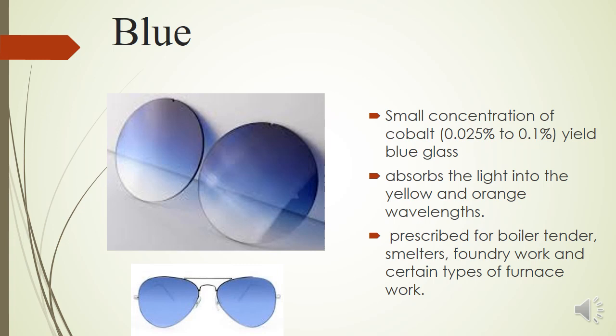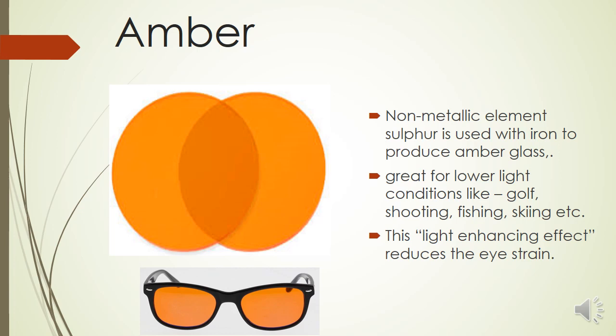The blue tint is produced by adding a small concentration of cobalt to the glass. It absorbs light in the yellow and orange wavelengths. This tint can be prescribed to people working in environments with molten glass, fire, or high heat — such as boiler work, smelting, foundry work, and furnace work — as it absorbs the heavy red-orange spectrum, reducing potential eye damage.